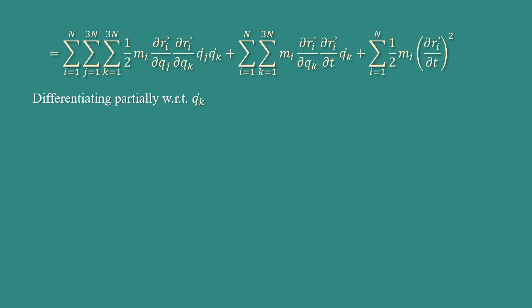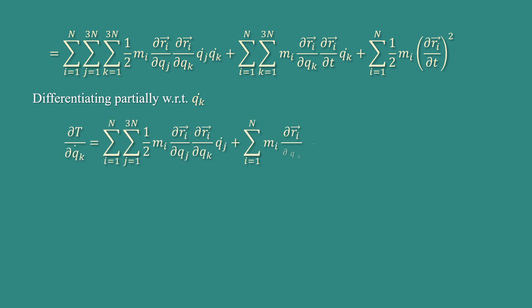Differentiating T partially with respect to q̇ₖ, we get ∂T/∂q̇ₖ = Σᵢ Σⱼ ½Mᵢ(∂rᵢ/∂qⱼ)(∂rᵢ/∂qₖ)q̇ⱼ + Σᵢ Mᵢ(∂rᵢ/∂qₖ)(∂rᵢ/∂t). This is the required expression for the generalized momentum.